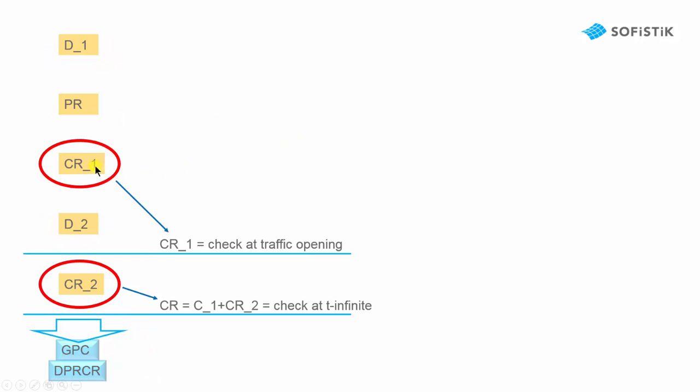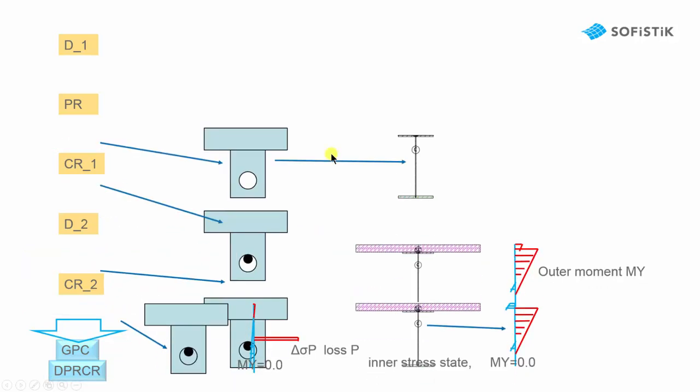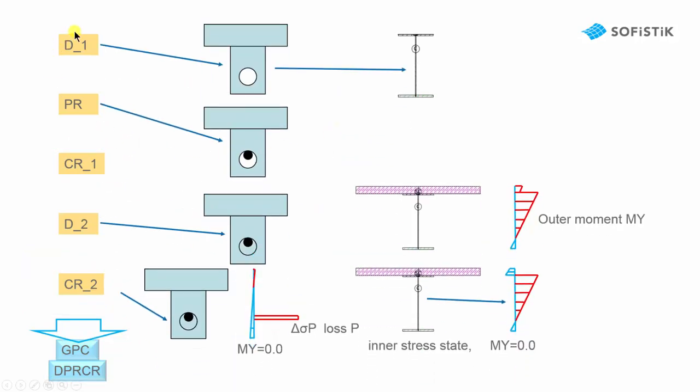Creep can be divided in creep 1 up to traffic opening, and creep 1 and creep 2 for checks at time infinite. We collect all this together in GPC, or dead load, prestress, and creep.